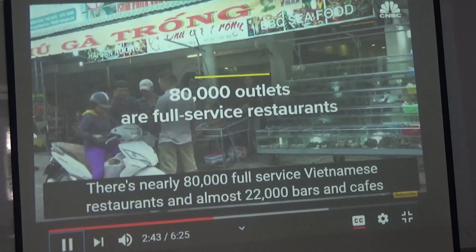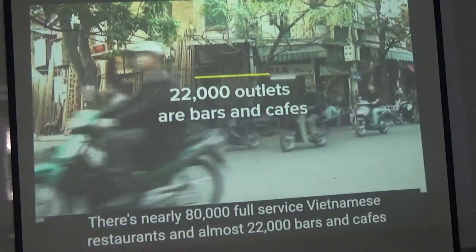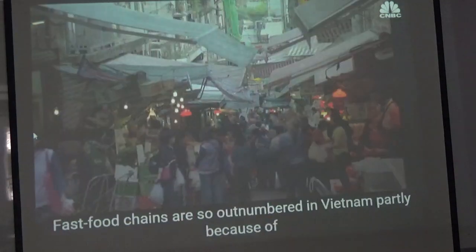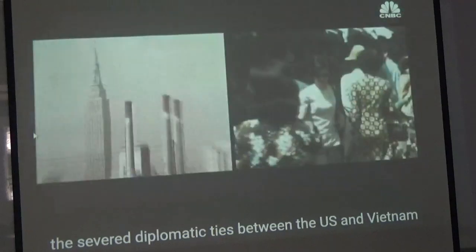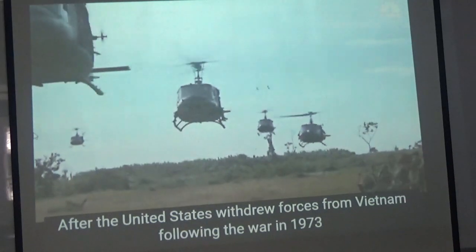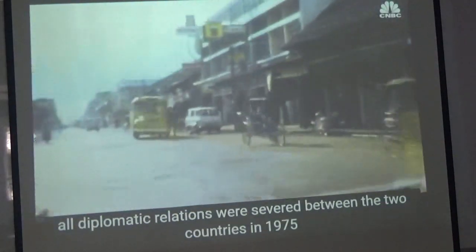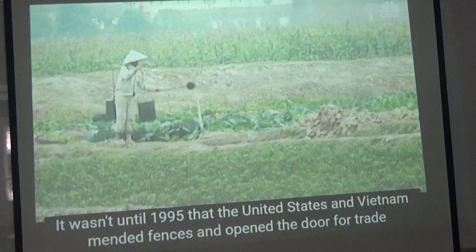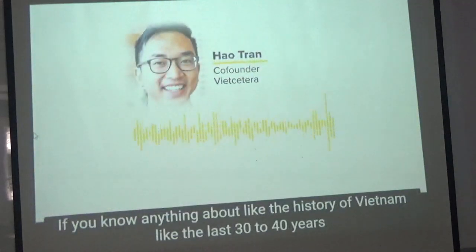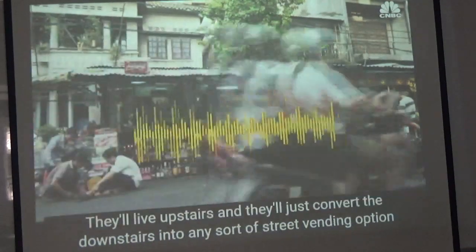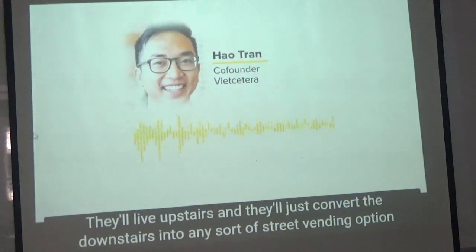Vietnam's food service sector has over 540,000 outlets — over 430,000 are local vendors and food kiosks. There are nearly 80,000 full-service Vietnamese restaurants and almost 22,000 local bars and cafes. Fast food chains account for just over 7,000 outlets. Fast food chains are still outnumbered partly because it wasn't until 1995 that the US and Vietnam normalized relations and opened the door for trade. A lot of storefronts are literally just people's homes where the downstairs is converted into a food option.